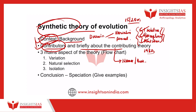Since if it is asked for a 20 marker, almost one page can be dedicated to the context or background of the Synthetic Theory. Then in the next page, you can come up with the three main aspects of this theory and explain it with a flowchart. The three main aspects of Synthetic Theory are: first, the occurrence, production, and redistribution of variation — how variations were produced and redistributed.